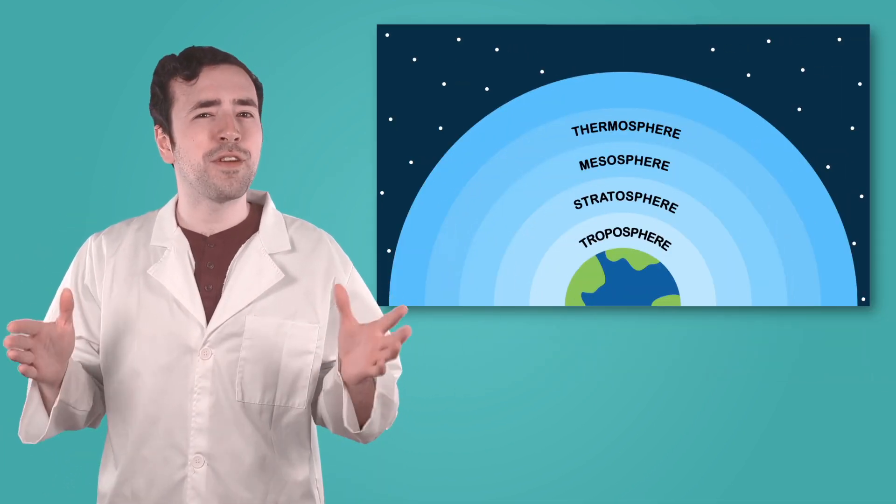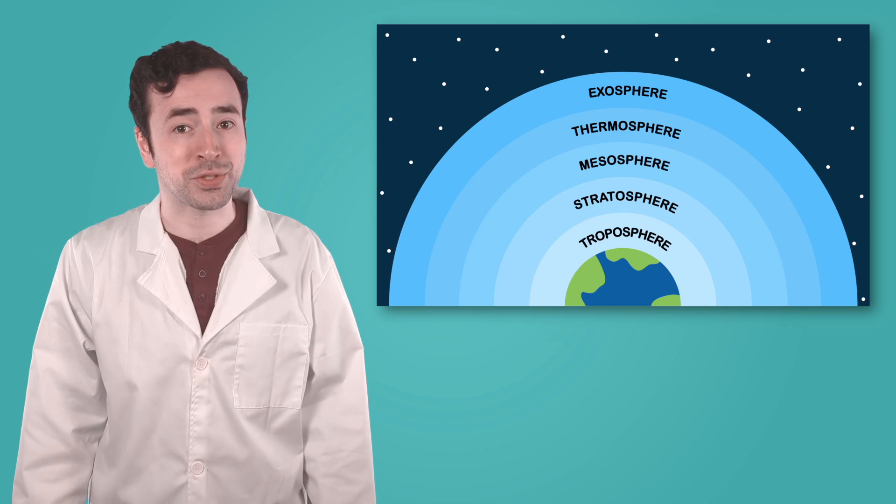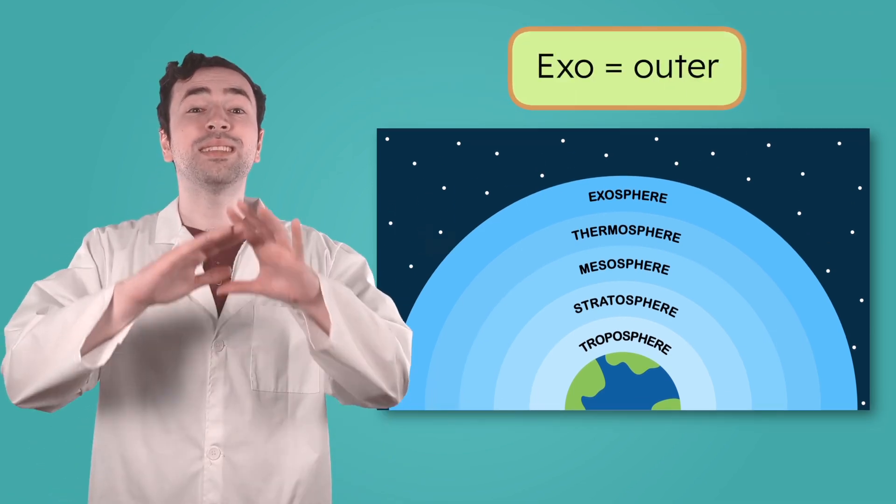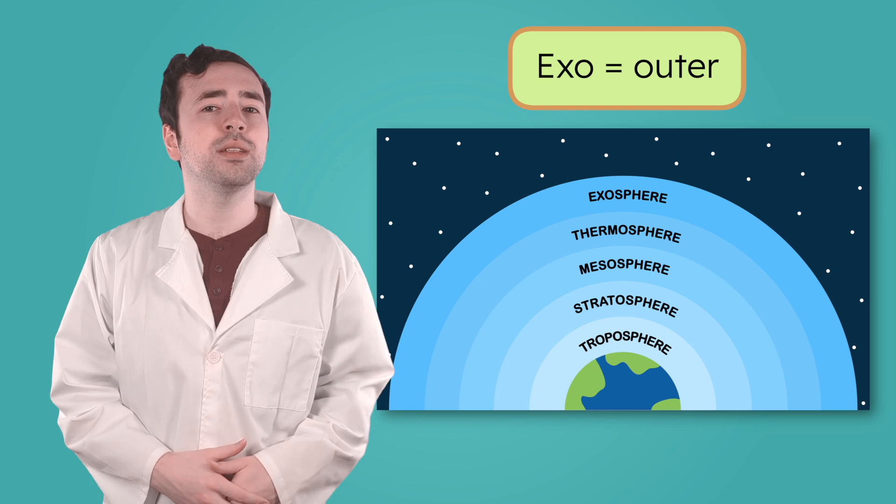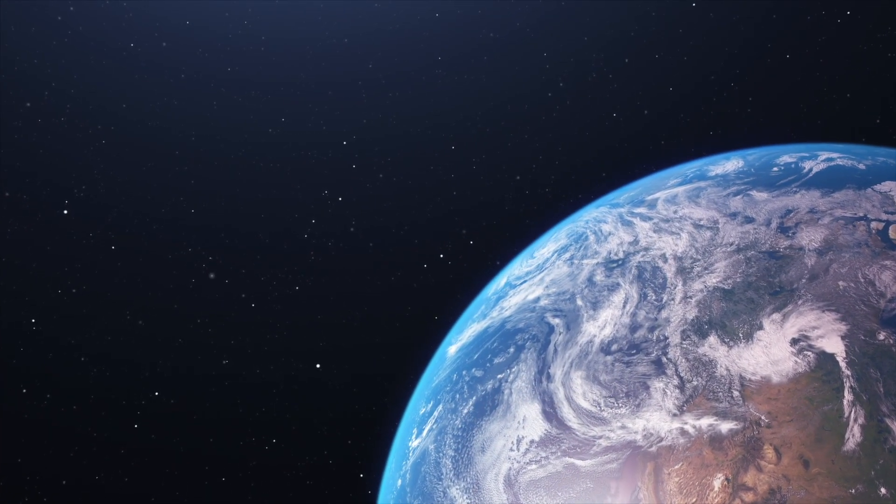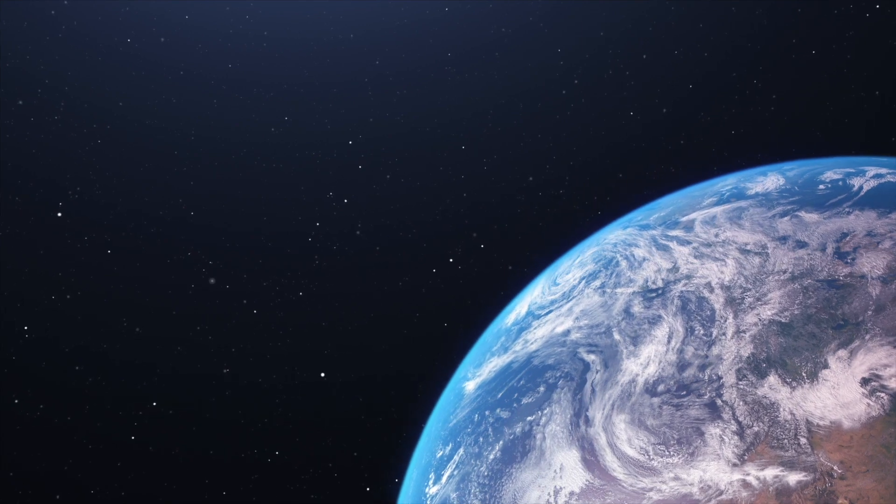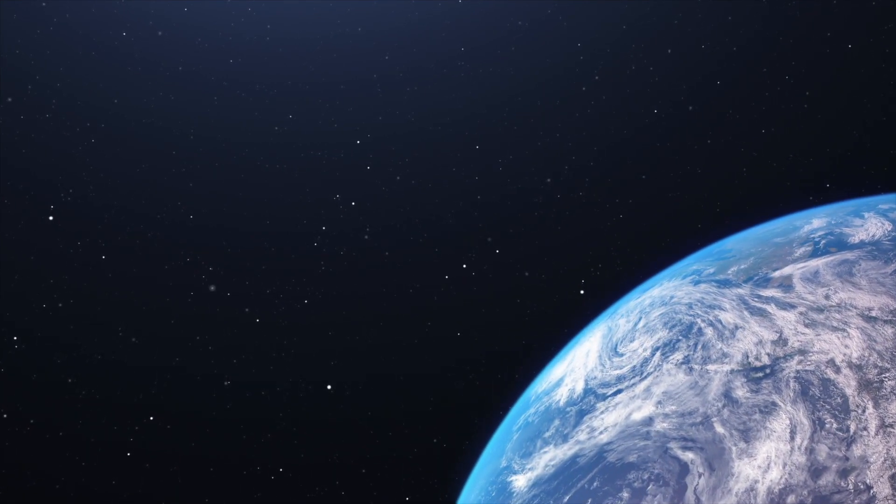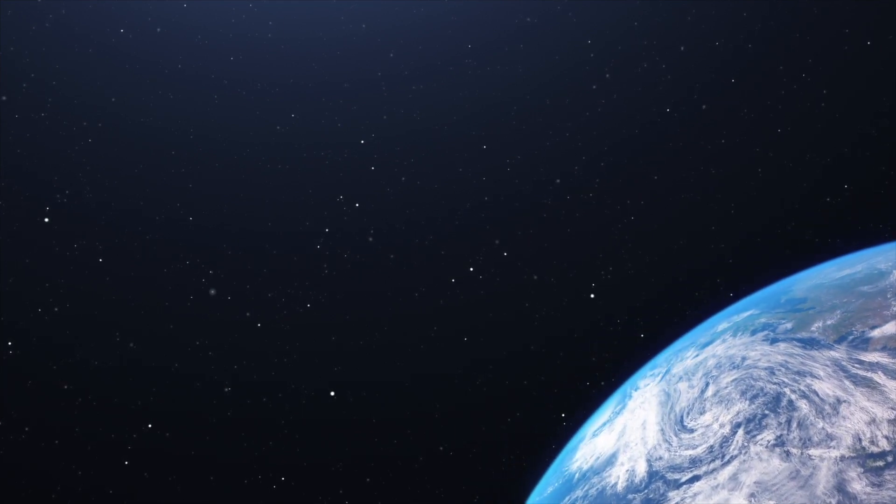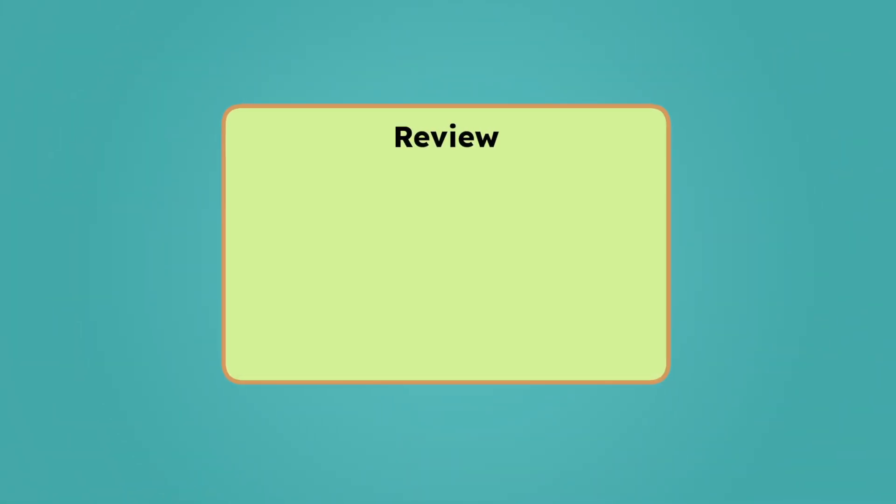All right, we've made it to the very top layer of the atmosphere: the exosphere. Exo means outer. This layer is where the atmosphere slowly fades into outer space. The air here is extremely thin, so thin that some scientists don't even consider it part of the atmosphere at all. There's almost no air here and it's completely silent. It acts like a gateway between Earth and space, where Earth's atmosphere ends and space begins.